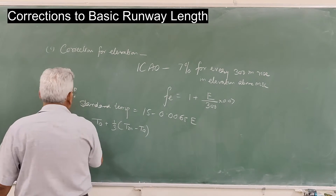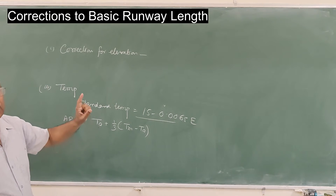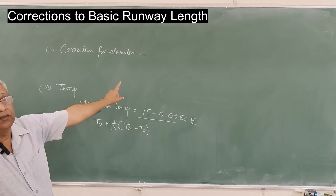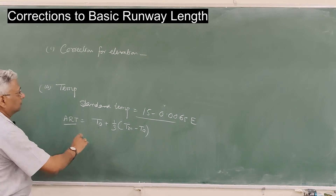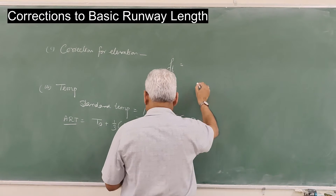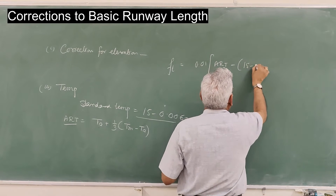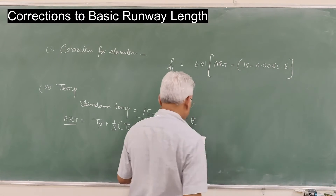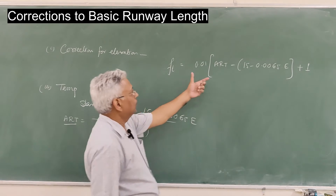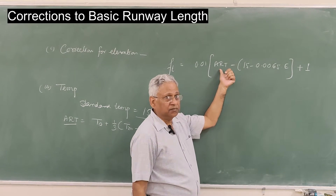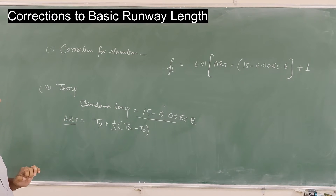The Airport Reference Temperature minus the standard temperature at that elevation gives the change in temperature. ICAO says the runway length should be increased after correcting for elevation: the corrected length should be further increased at the rate of 1% for every 1 degree rise in airport temperature above standard. The correction factor for temperature is: FT = 0.01 × (ART − (15 − 0.0065 × E)) + 1. The reference temperature at the airport minus the standard temperature at that site gives the rise in temperature, and you increase the length by 1% per degree. That is the correction due to temperature.